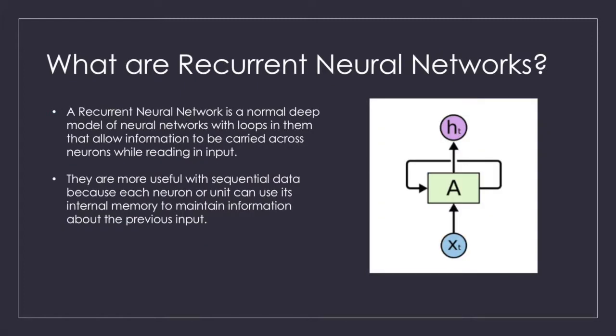A recurrent neural network is a normal deep model of neural networks with loops in them that allow information to be carried across neurons while reading an input. They're especially useful with sequential data because each neuron or unit can use its internal memory to maintain information about the previous input. This is great because in cases of language, I had washed my house is much more different than I had my house washed. This allows the network to gain a deeper understanding of the statement.